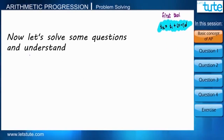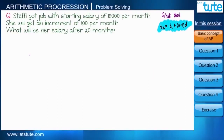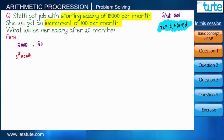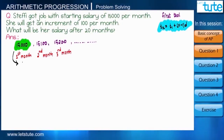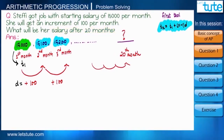Many times we find it difficult to identify what is given and what we need to find. Here is a situation: Steffi's salary in the first month is 15,000 and every month she gets an increment of 100. So the sequence would be 15,000, 15,100, 15,200, and so on. Here t1 equals 15,000 and the common difference d equals 100. We need to calculate her salary in the 20th month, so n equals 20 and we have to find t20.